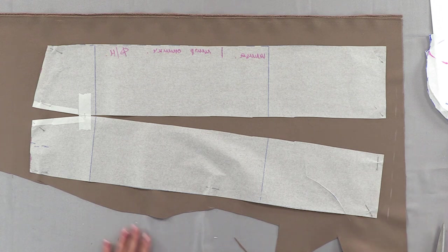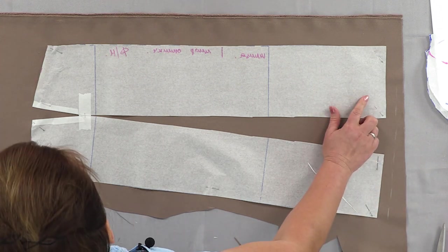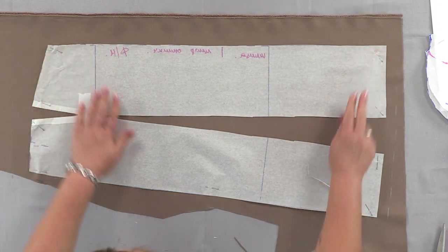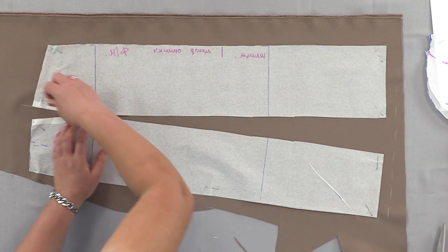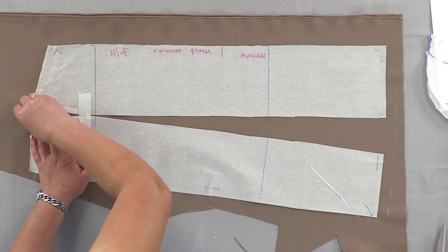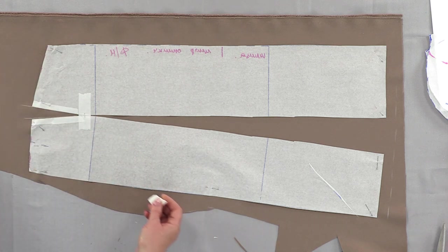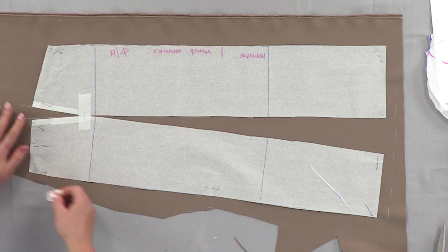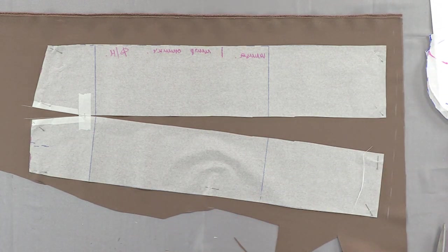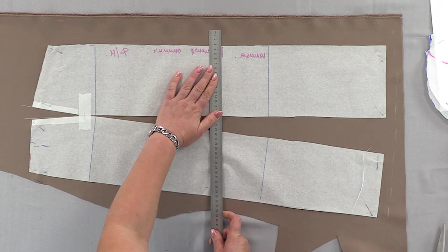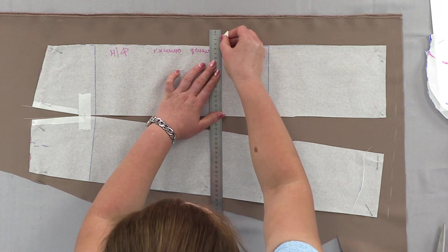We already have the yoke. The base piece of the back side. Let's draw the dart. At 2 centimeters allowance over here. Right. And also we have the slit.